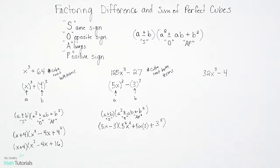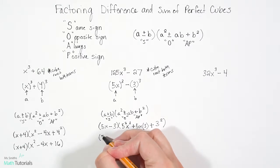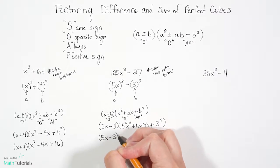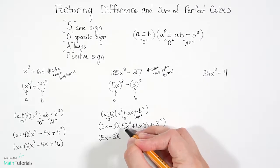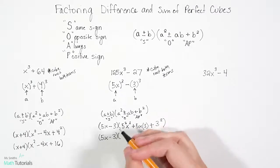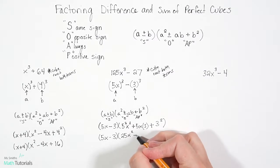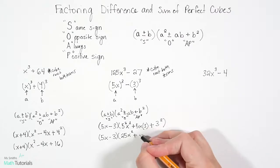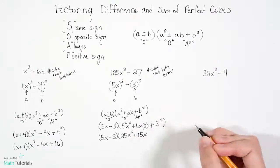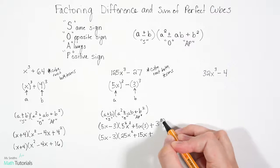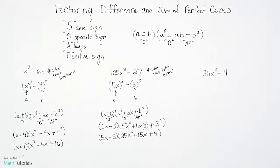And now we just want to clean it up. 5x minus 3. Nothing to update there. Nothing to simplify there. Now right here. What is 5²? So 5² is 5 times 5, which is 25. x². Which I bring down. Now plus 5x times 3 is 15x. Plus 3² is 9. So there we have our factored form for our difference of perfect cubes.